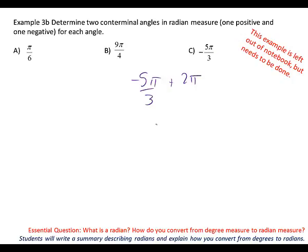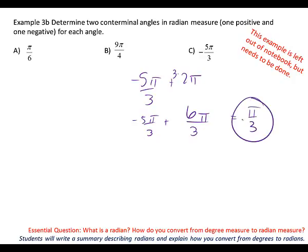So, if I add 2π to it, I need to make a common denominator. What would my common denominator be? 3. So, instead of 2, what would I write? 6π over 3. So, what's negative 5π over 3 and 6π over 3? π over 3 would be a positive coterminal angle.